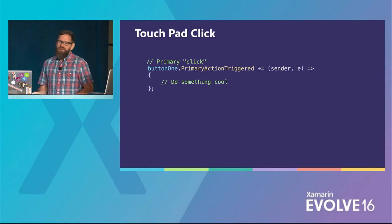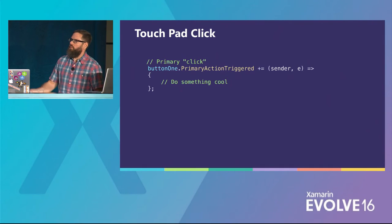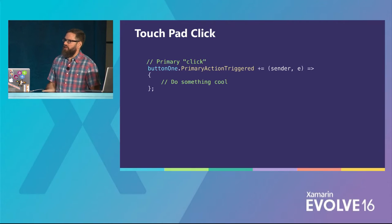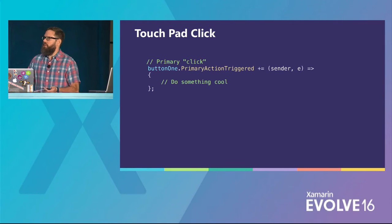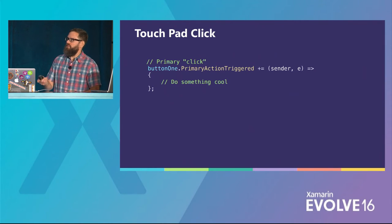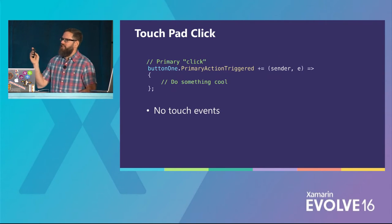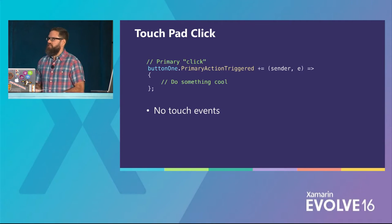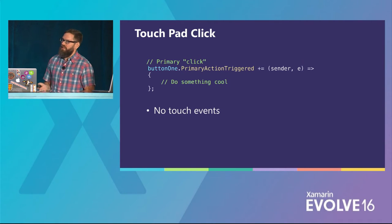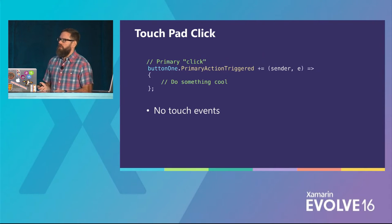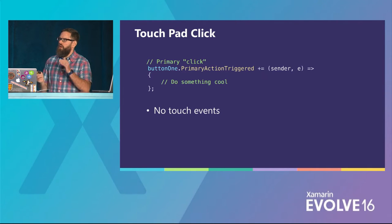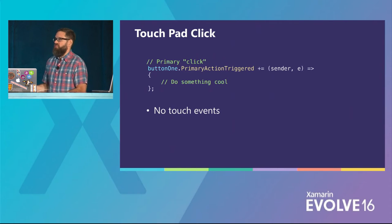The touch surface supports single-finger swipes only — no pinch-to-zoom — plus taps and full clicks with tactile feedback. The menu button is always a back button in our navigation hierarchy, or a pause button in games. The play/pause button is generally a playback shortcut for media, or game controls like fire or jump. There are no touch events in tvOS. Instead, we have the primary action triggered event and UI press objects — pressBegan, pressChanged, pressEnded — instead of touchBegan, touchChanged, touchEnded.